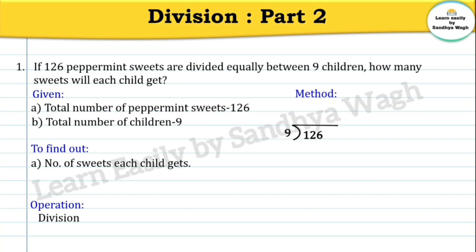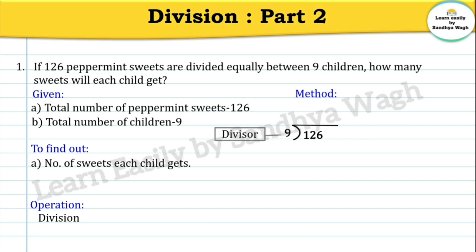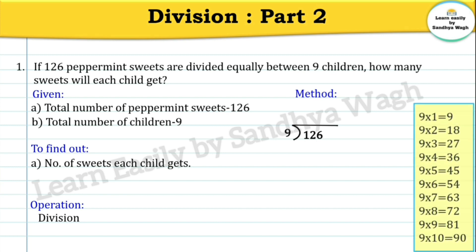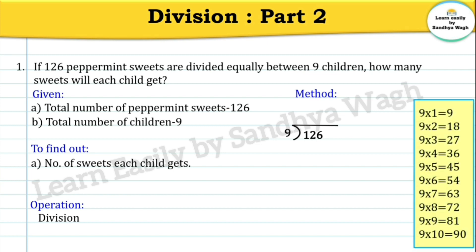We will use the division method. 126 divided by 9. Here 126 is the dividend and 9 is the divisor. So let's write the 9 times table. Now let us divide the leftmost digit of this dividend, which is 1. Do we have the number 1 in the 9 times table? No.